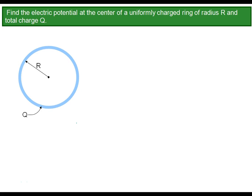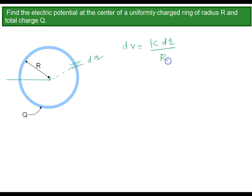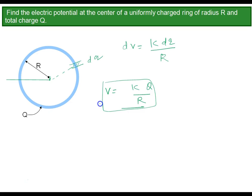Now discuss the electric potential at the center of a uniformly charged ring of radius R and total charge Q. For a continuous distribution, take a small elemental charge, find the small elemental potential at the center: dV equals K dq by R. The net potential is the integration of K dq by R. Since K and R are constant, integration of dq is the net charge Q, so directly the potential at center is KQ by R. One thing you are supposed to know: even if charge is not uniformly distributed, the expression is still the same because potential is a scalar quantity — it is valid for non-uniform distribution of charge as well.